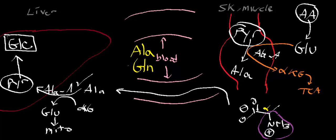Alternatively, oxaloacetate can react with malate dehydrogenase in the mitochondria to give malate, malate is transported across the membrane, and cytosolic malate dehydrogenase converts it back to oxaloacetate. Then cytosolic phosphoenolpyruvate carboxykinase gives PEP for gluconeogenesis. A third way is converting oxaloacetate into aspartate via aspartate aminotransferase, transporting aspartate through the mitochondrial membrane, and using cytosolic aspartate aminotransferase to regenerate oxaloacetate for gluconeogenesis.